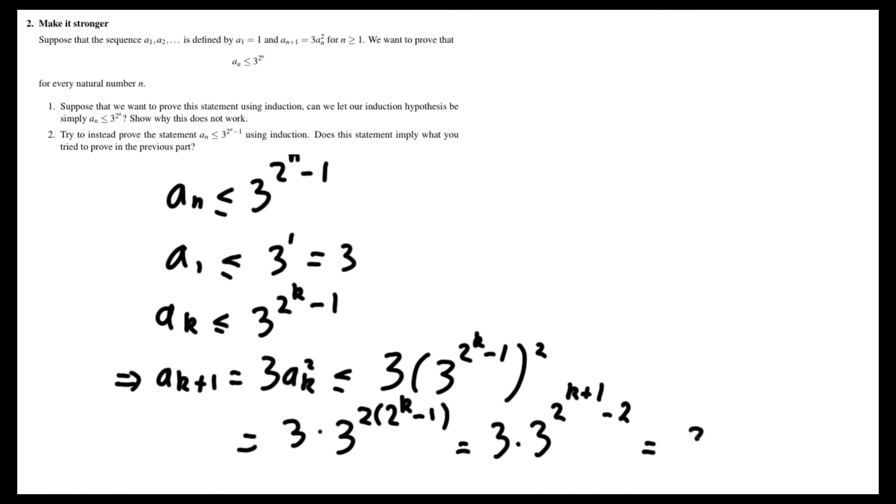And since we multiply that by 3, we can just add a power of 1 to the exponent and get 3 to the power of 2ᵏ⁺¹ minus 1, which is in fact exactly what we want over here.